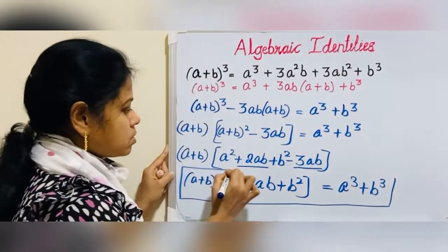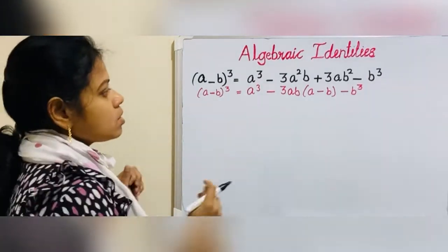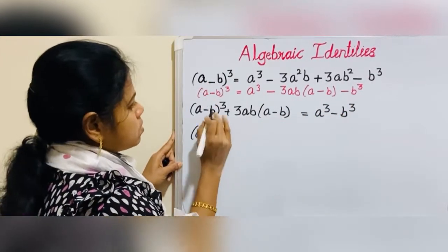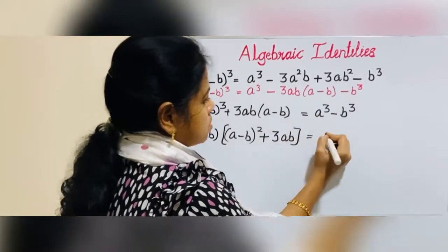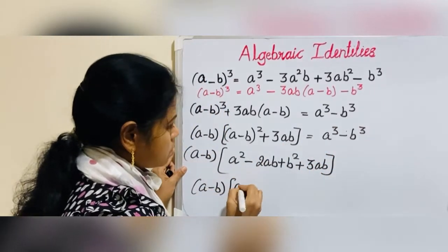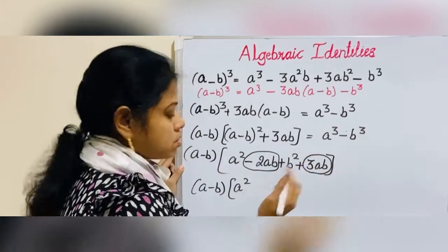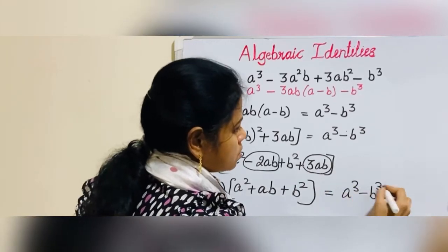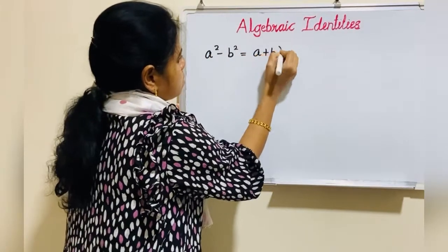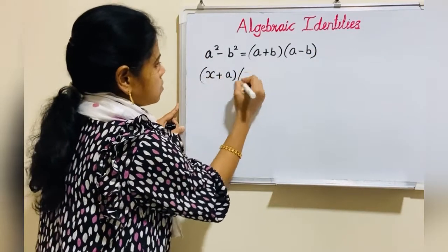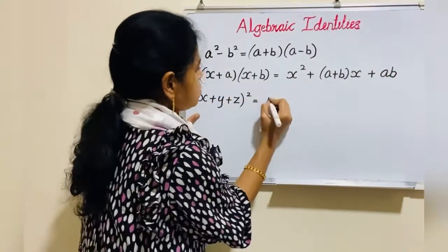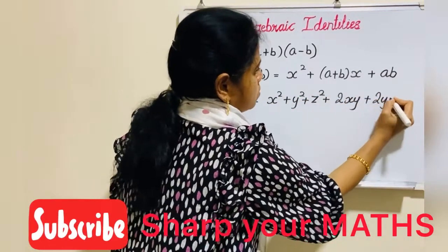Next: a³ + b³ = (a+b)(a² − ab + b²). Next: a³ − b³ = (a−b)(a² + ab + b²). Next identity: a² − b² = (a+b)(a−b). Also: (x+a)(x+b) = x² + (a+b)x + ab. And: (x+y+z)² = x² + y² + z² + 2xy + 2yz + 2zx.